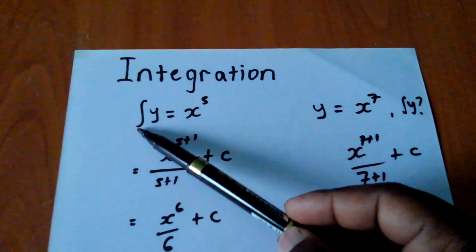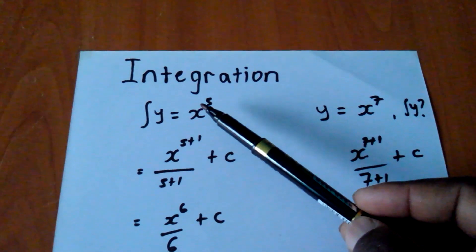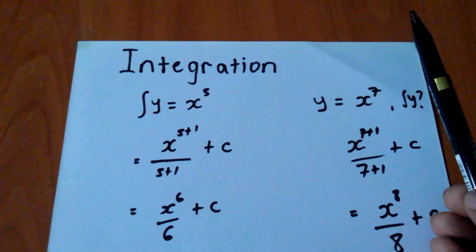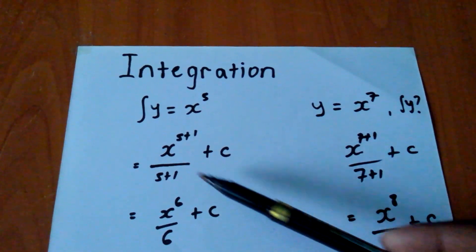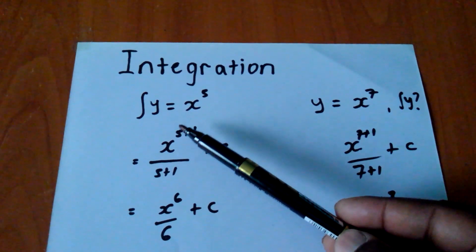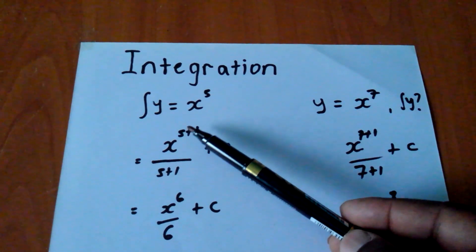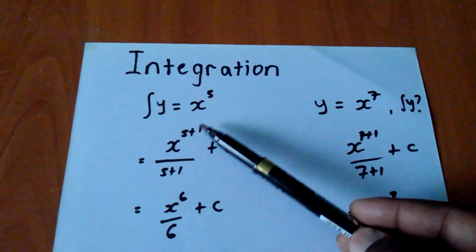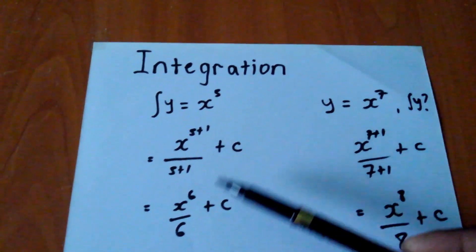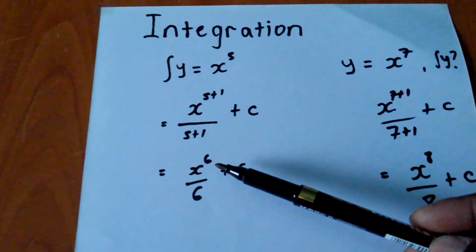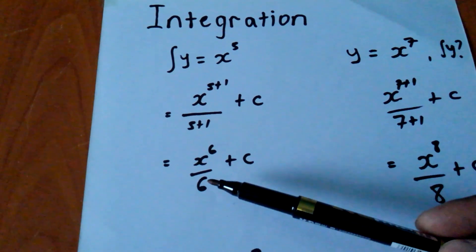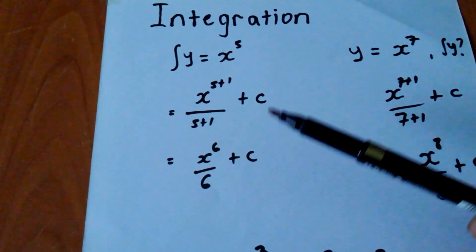Supposing we are given y equals x to the power of 5, and I have to integrate. What we do here, we write x to the power 5, add 1 to the power, then divide by the new power, which is 5 plus 1, then plus a constant. So our answer will be x to the power 6 over 6 plus c, which is a constant.